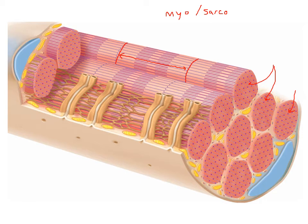Because each myofibril is made up of thousands of sarcomeres, the entire myofibril will shorten. Since all these myofibrils are shortening together, it's going to shorten the muscle, which will pull on something — and that's what muscles are designed to do. So we've got these myofibrils and then we've got the sarcomere.